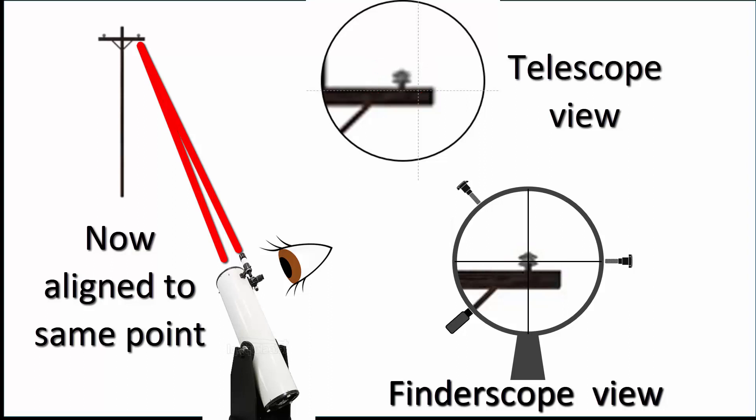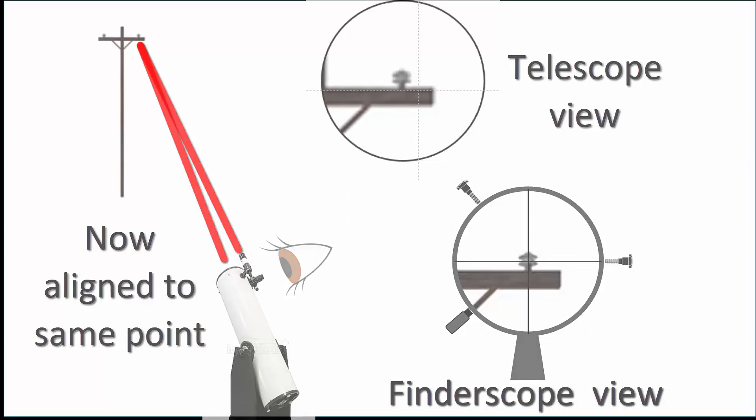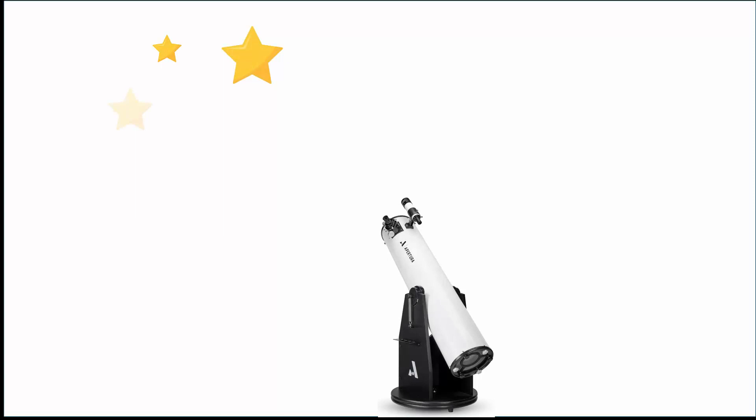Once the finder scope and main scope are aligned, they will require little adjustment the next time you set the telescope up. You are now ready to start seeking objects to observe through your telescope.